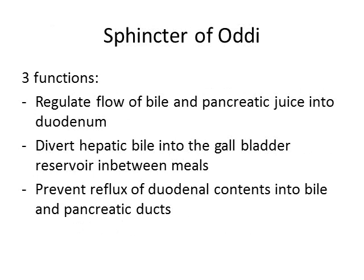In the duodenum we have the ampulla of Vater, an opening that allows bile and pancreatic juice into the duodenum. It's controlled by a muscle called the sphincter of Oddi. The sphincter has three functions: it regulates flow of bile and pancreatic juice into the duodenum; in between meals it's closed, so bile produced by the liver is diverted back into the gallbladder, filling it as a reservoir. It also prevents duodenal contents from refluxing into the bile and pancreatic ducts, which could cause infection and predispose to bile duct stones.